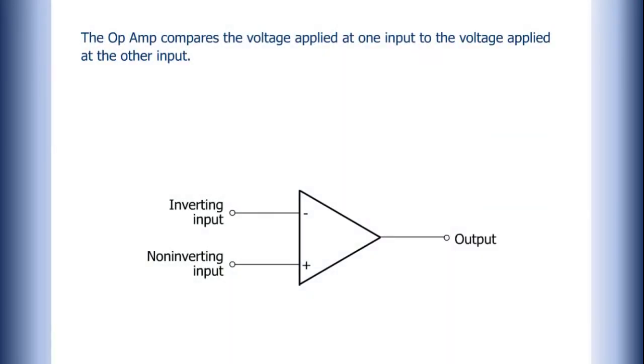The Op Amp compares the voltage applied at one input to the voltage applied at the other input. Any difference between the voltages, even if it is small, drives the Op Amp into saturation.